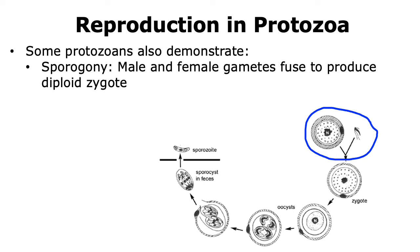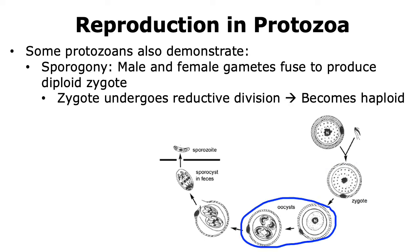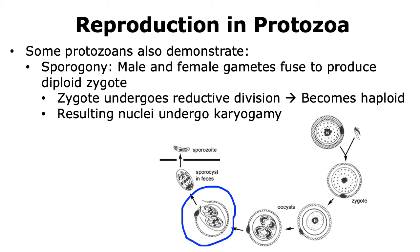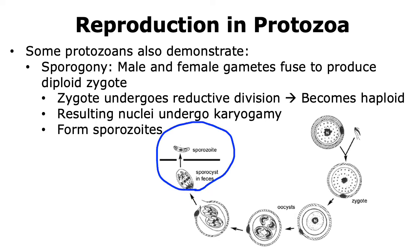Sporogony is a type of multiple fission where the male and female gametes that arose from gametogony fuse to produce a diploid zygote. The diploid zygote then undergoes reductive division, which is similar to meiosis in the sense that four haploid daughter cells are formed, but occurs through a mechanism different than meiosis. The resulting haploid daughter cells will undergo karyogamy, where their nuclei divide to form many different nuclei, and then the cytoplasm reorganizes around the nuclei and they are finally released. These daughter cells are called sporozoites, which are haploid daughter cells.